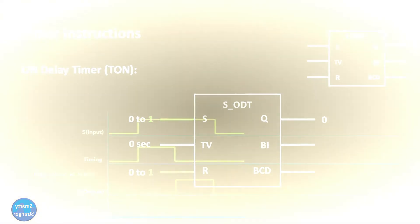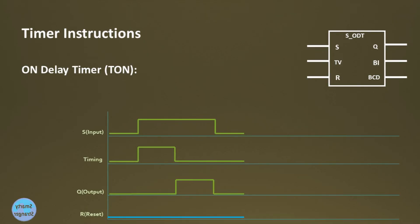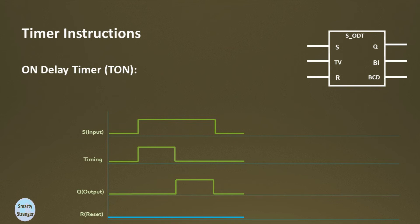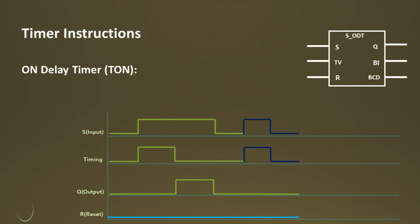Let's understand the On Delay timer via trends view. In the first cycle, if there is a positive edge at S input, the timer starts its timing, and when it completes its defined timing, output Q starts giving 1 or high. The output Q remains 1 as long as the input on S is high. In the second cycle, if S input changes from 1 to 0 before time elapsed, the timer stops immediately. In the third cycle, if the input on R changes from 0 to 1 while the timer is running, the timer stops.